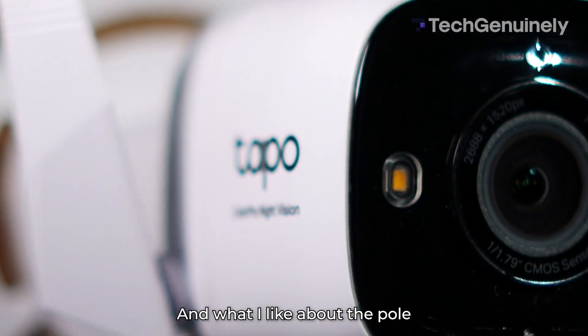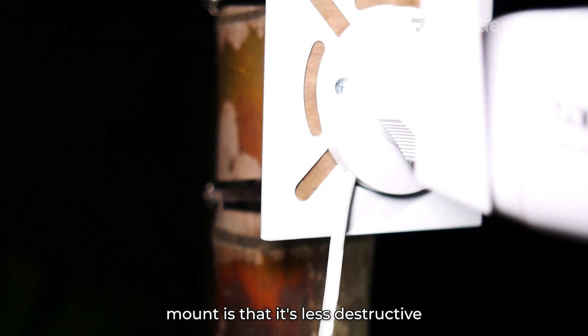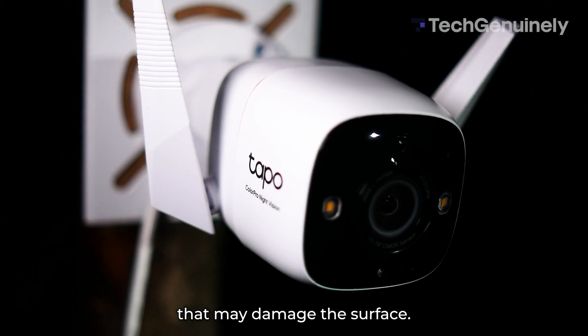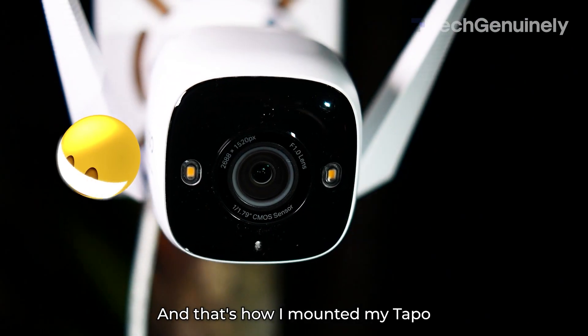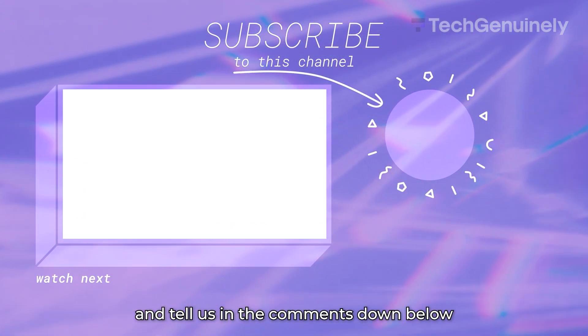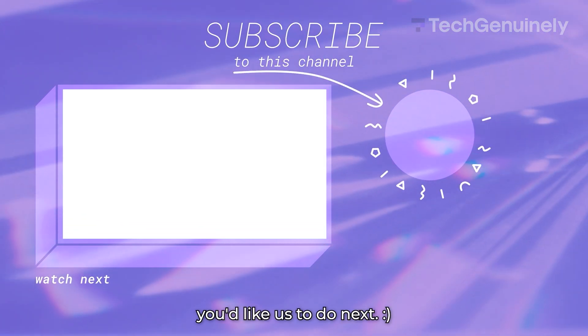And here it is. And what I like about the pole mount is that it's less destructive than other ways of mounting like using screws or tape that may damage the surface. And that's how I mounted my Tapo ColorPro Outdoor Cam. Like this video if it helped, and tell us in the comments down below what smart camera tutorials you'd like us to do next.